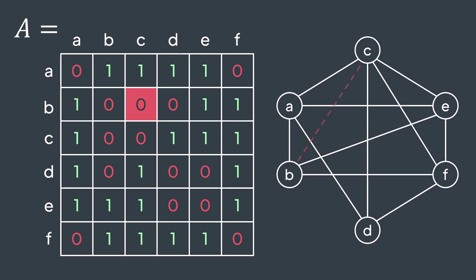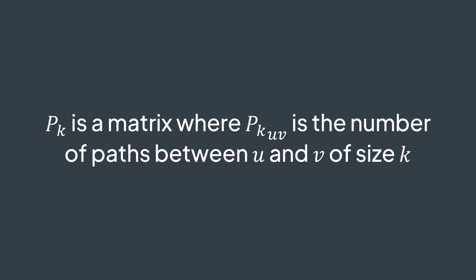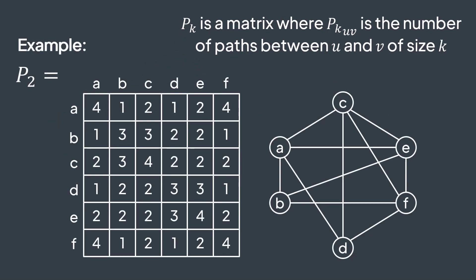Now we want to calculate Pk, a square matrix where the cell ij represents the number of paths of length k between i and j. This is P2 for example, the matrix that contains the number of paths of length 2 between each pair of vertices. Now we want to calculate P3, the one with paths of length 3.